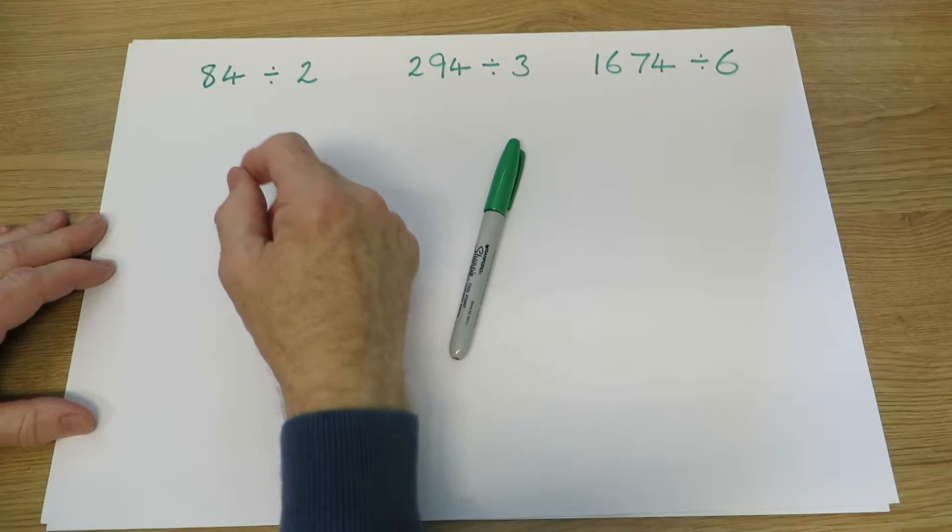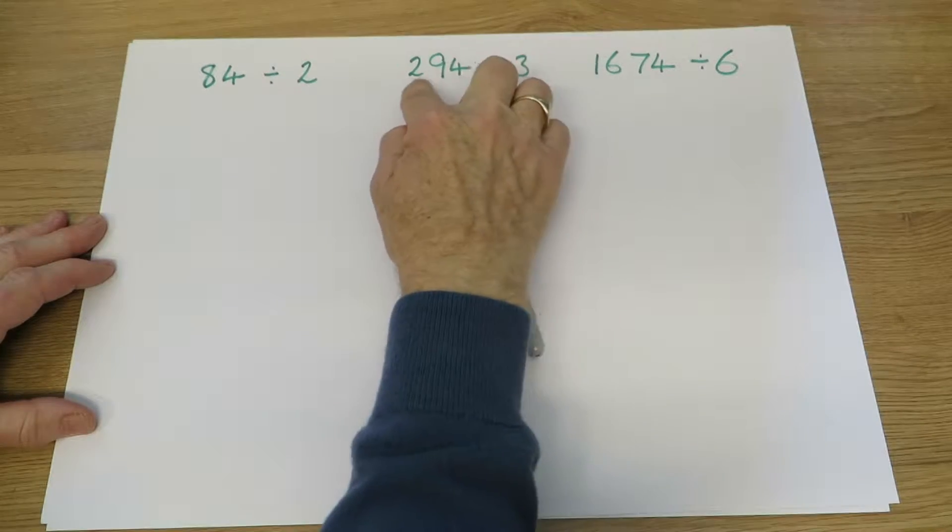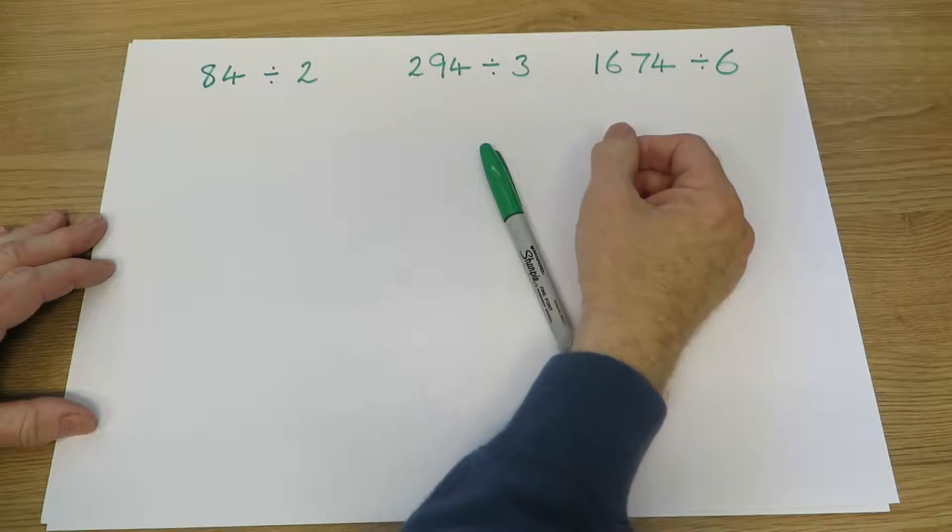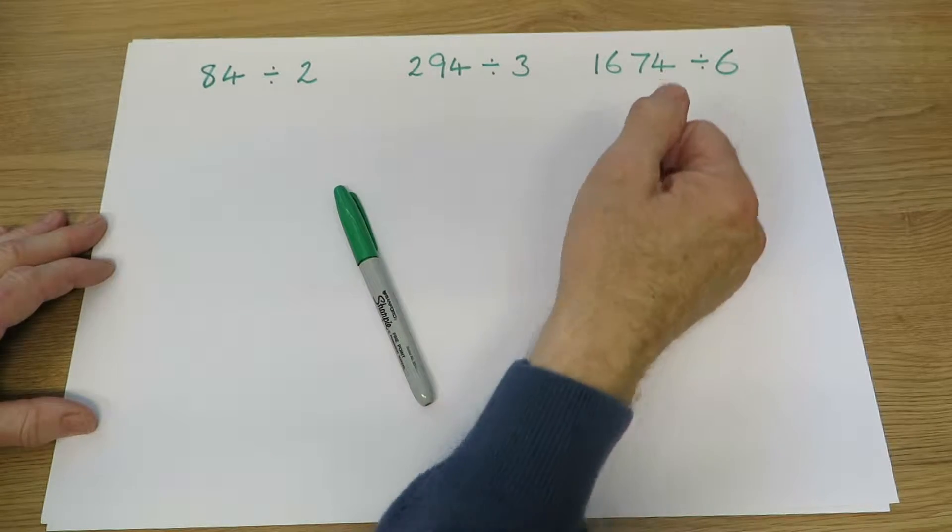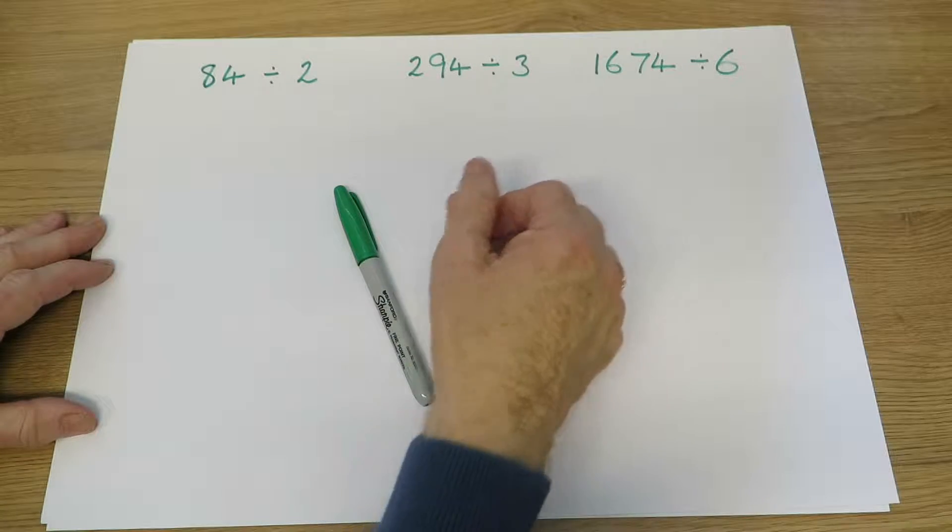They will continue to practice dividing two-digit numbers and three-digit numbers by one-digit numbers, and they will extend this work to four-digit numbers using formal written short division.